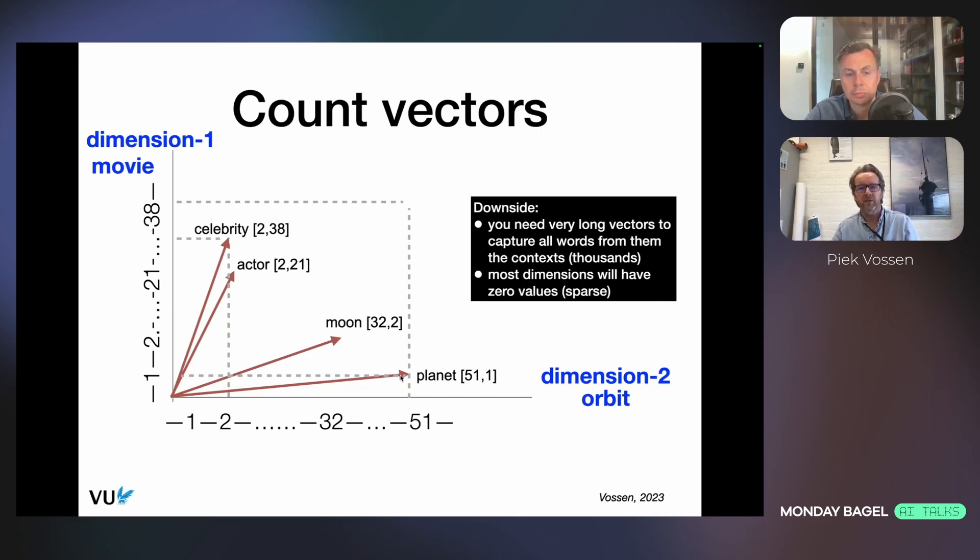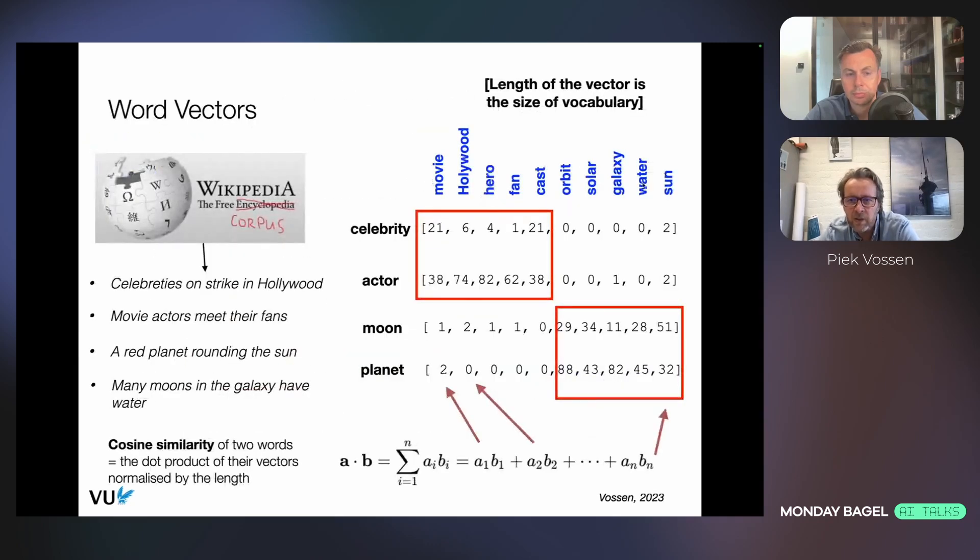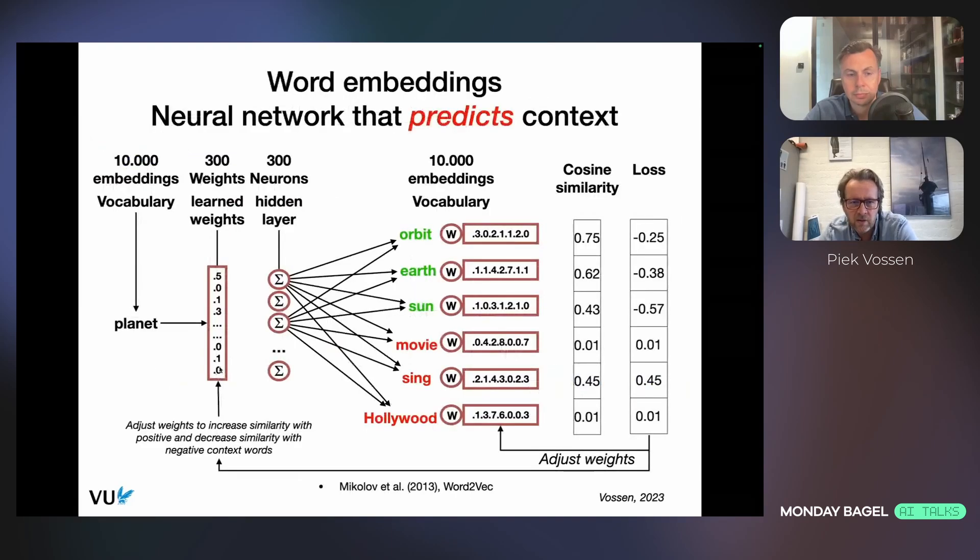It's not a very efficient way of doing it. Word embeddings was the trick to turn these very long, sparse count vectors into very dense vectors by training a neural network not to represent the context, but predict the context. We find a very simple neural network where we have only 300 dimensions. If I want to do this on all of Wikipedia, I will have something like maybe 50,000 dimensions with a lot of zeros for each word. In this case, we only have 300.